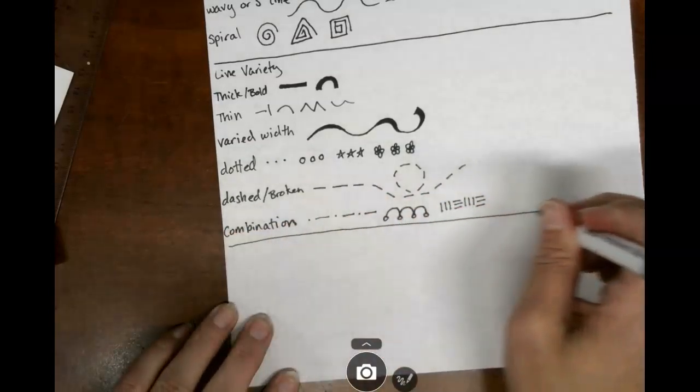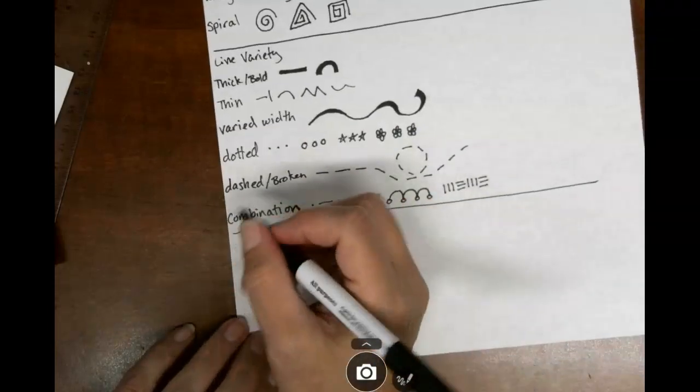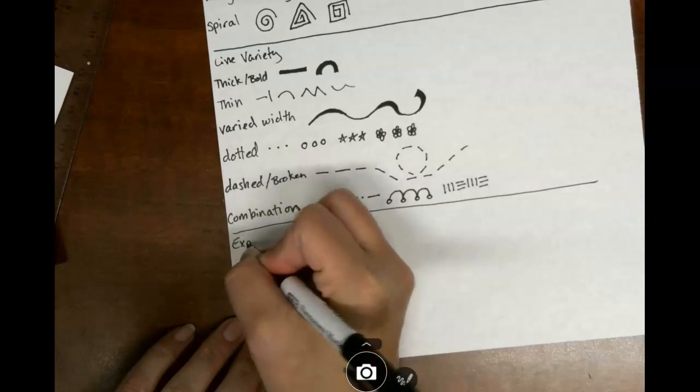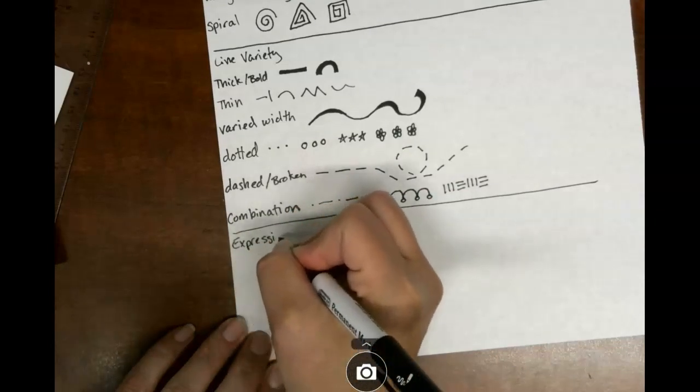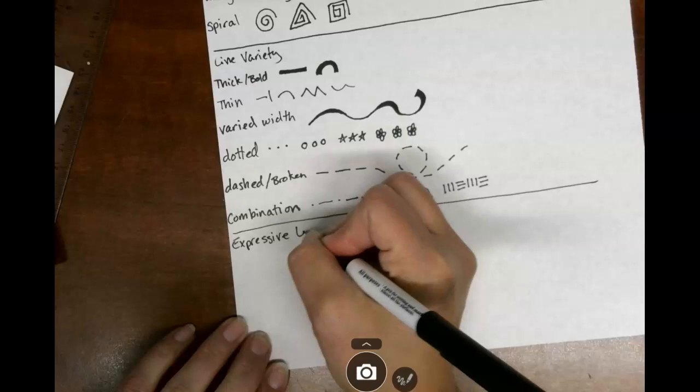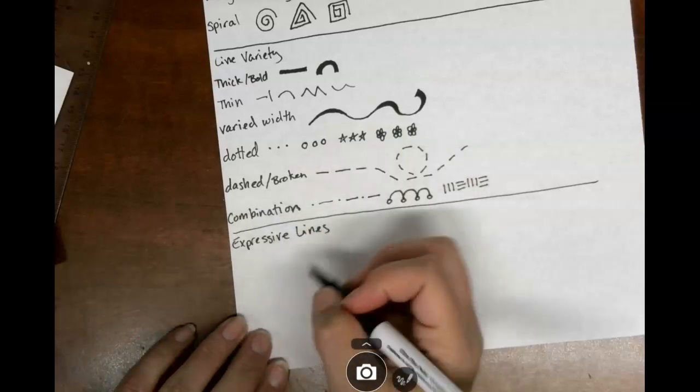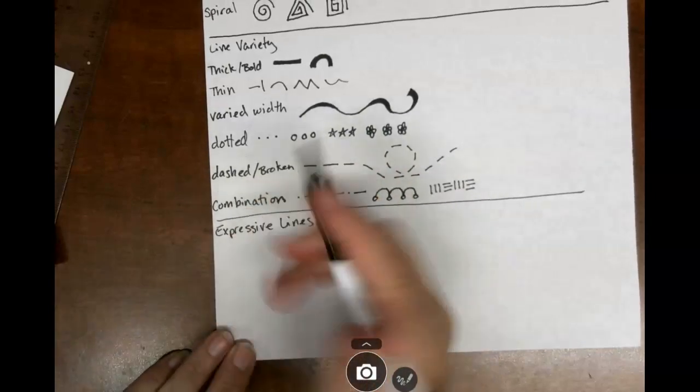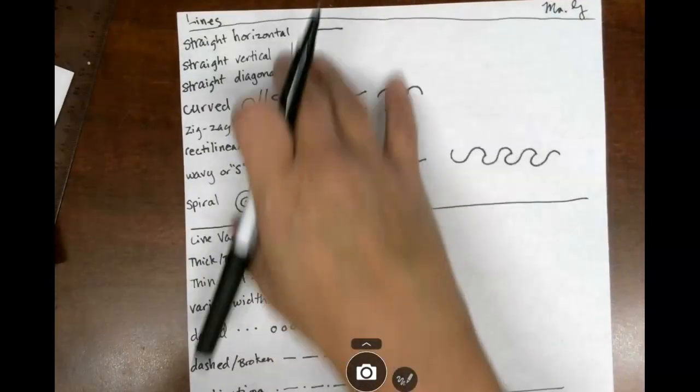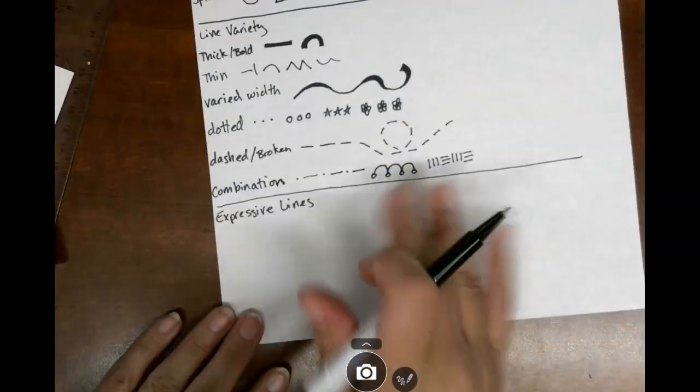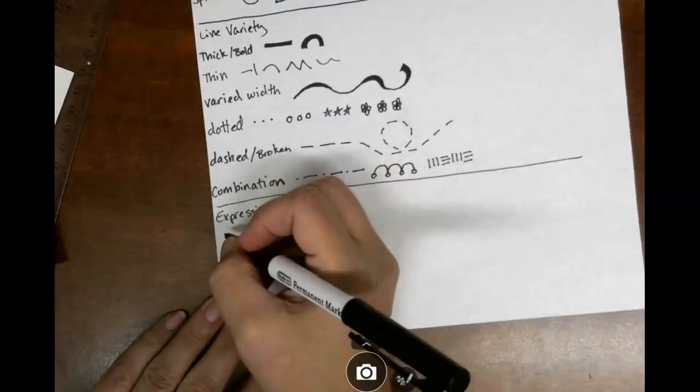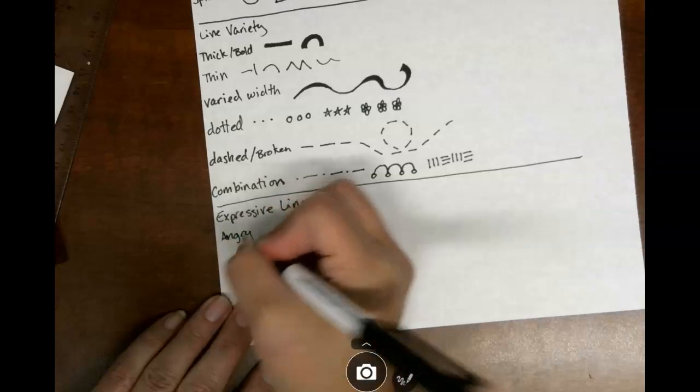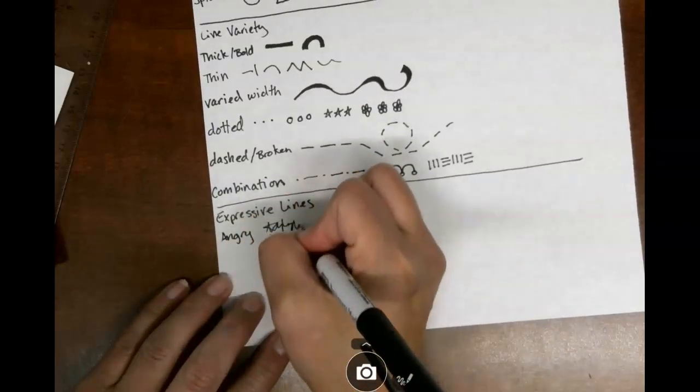Next we have the expressive lines, E-X-P-R-E-S-S-I-V-E lines. Now these ones are personal. Nobody else is going to have these but you, so don't copy mine. But they also can't be the basics that you have right up here. They need to be a little bit more. So we're going to start off with angry, A-N-G-R-Y. This is my angry line. This is my line that's just argh.